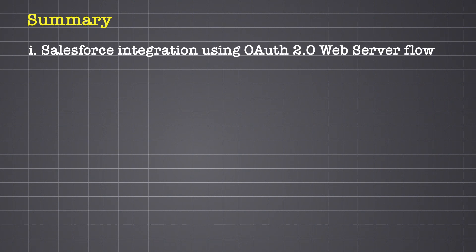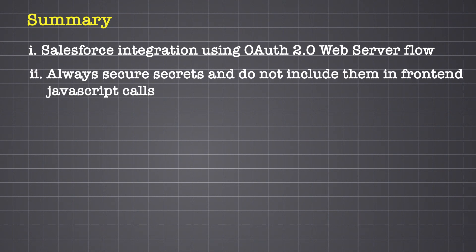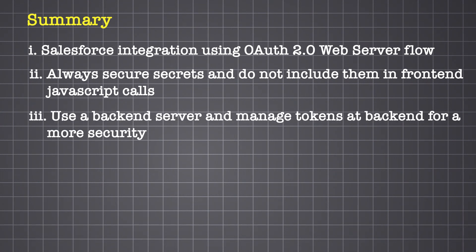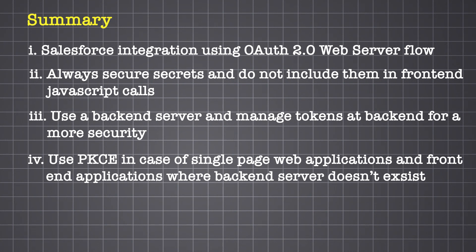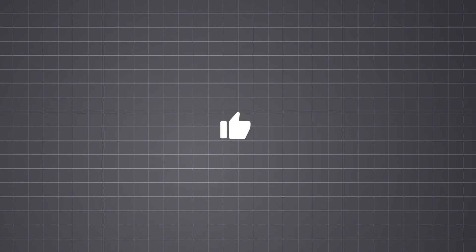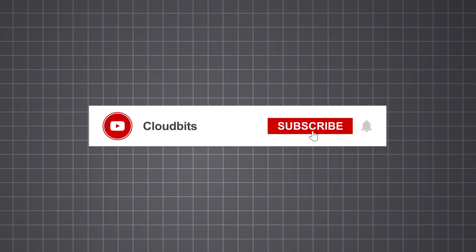To summarize this video: we explored multiple ways to integrate Salesforce using the OAuth 2.0 web server flow. We saw how making direct front-end JavaScript calls is not recommended as it exposes sensitive information like the client secret. While using a backend server is a more secure option, it adds complexity and requires you to manage and store secrets carefully. Another consideration is PKCE, which eliminates the need to store a client secret, making it ideal for public clients like single-page web applications or mobile apps where you can't safely store a client secret. If you found this video helpful, give it a like, drop your questions in the comments, and consider subscribing. Thanks!